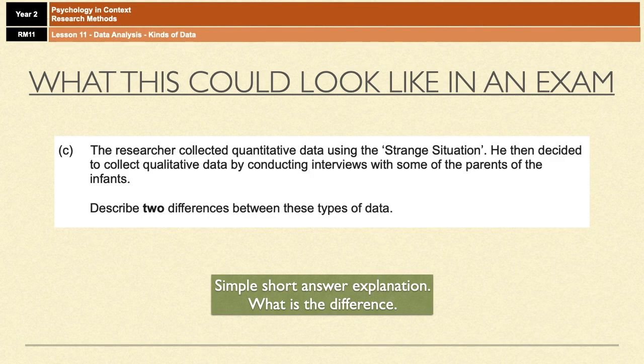what is the difference between these two types of data? So you're very often given some kind of scenario, and then you're told something like here, where the researcher collects quantitative data, but then decides to choose qualitative data as well. What is the difference between the two? Sometimes it could be a two marker, just for one difference between the two. Sometimes it can be up to a four marker for two differences between these types of data.